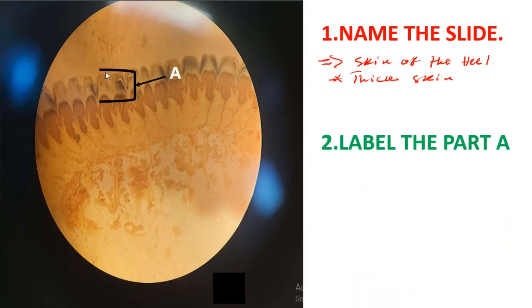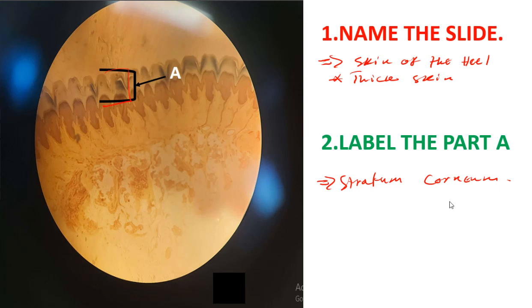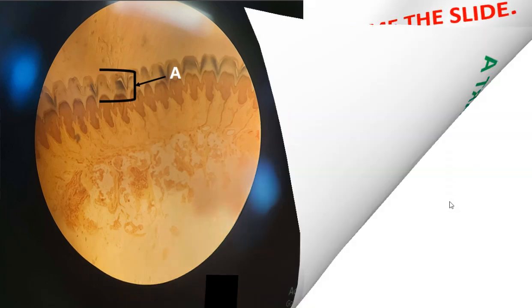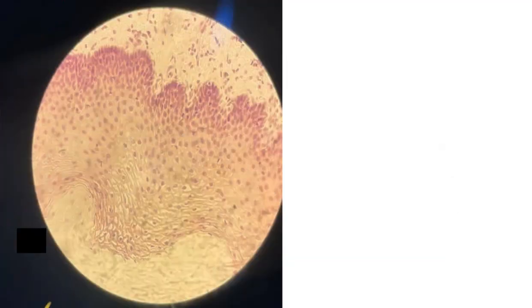Label part A: this is the stratum corneum, which is one of the layers of the skin and part of the epidermis.